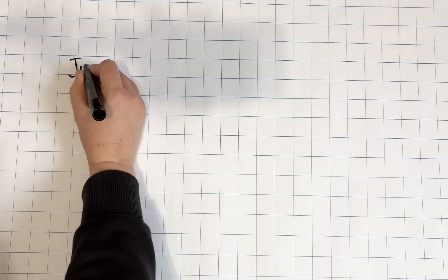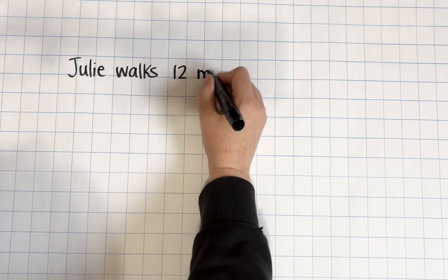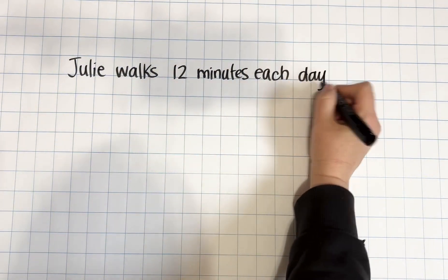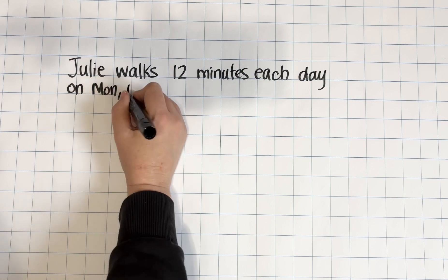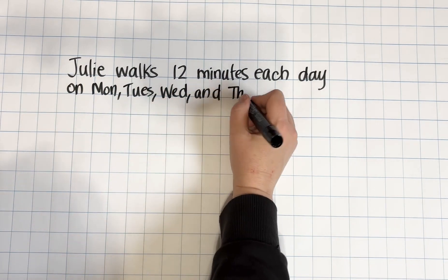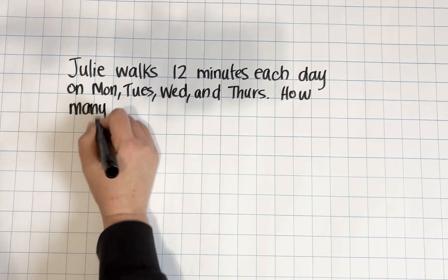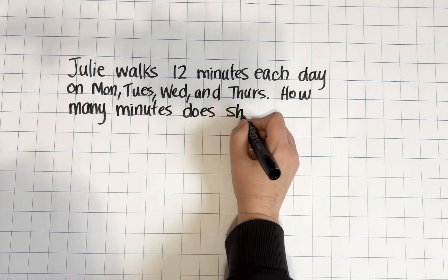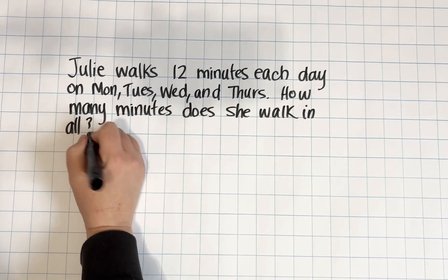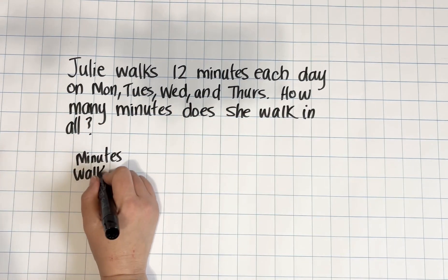Let's look at another type of multiplication problem, this time without the comparison. For this type, we are going to draw a simple model drawing showing Julie's walking on each of the four days. This is going to make it easy to see that we could use either repeated addition or multiplication in order to solve it.